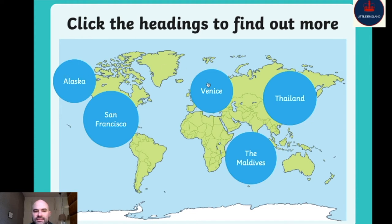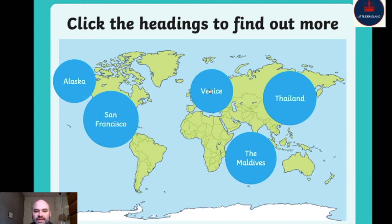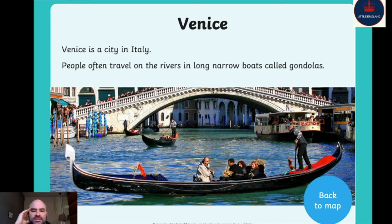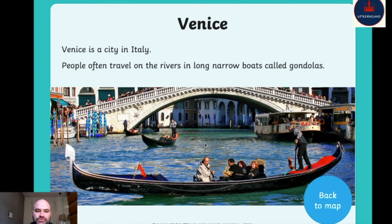Now, Venice. Venice is a city in Italy, so we are now in Europe. In Italy, people often travel on the rivers in a long narrow boat called gondolas. The city of Venice has canals and rivers all through it — they don't have a lot of streets. They have these small boats called gondolas, and they ride them to traverse the city.